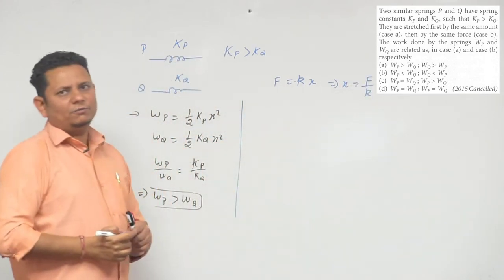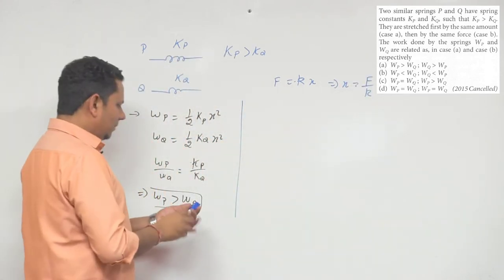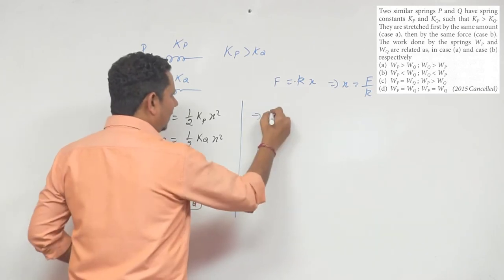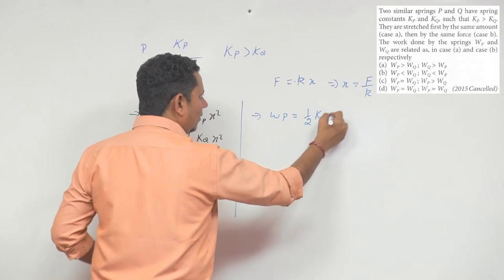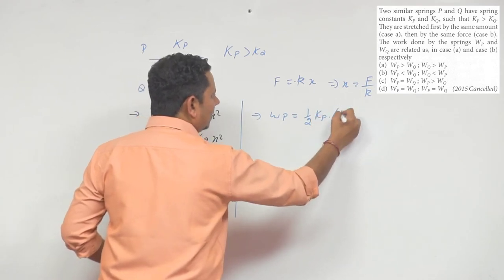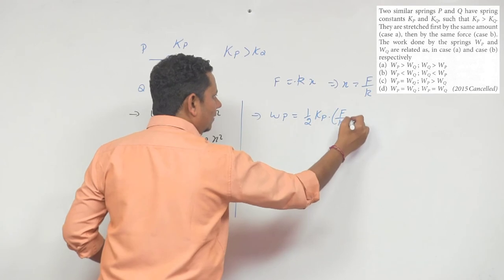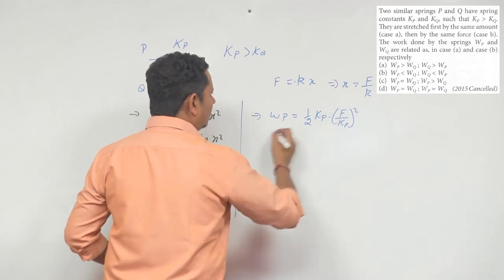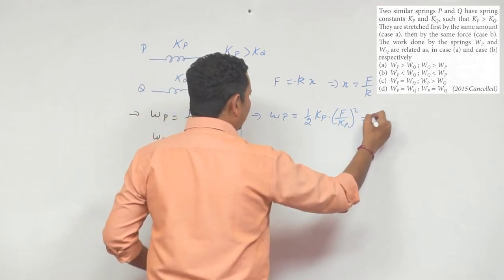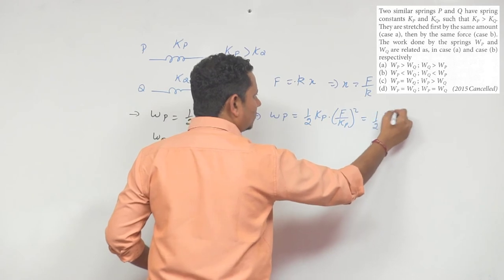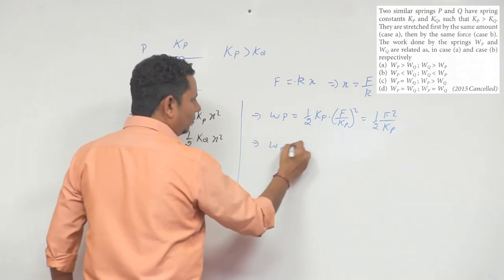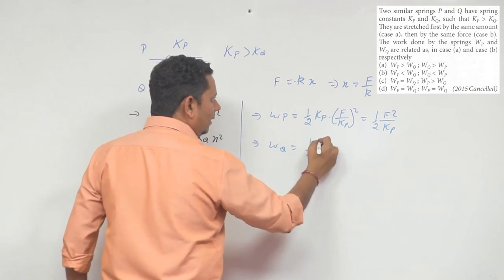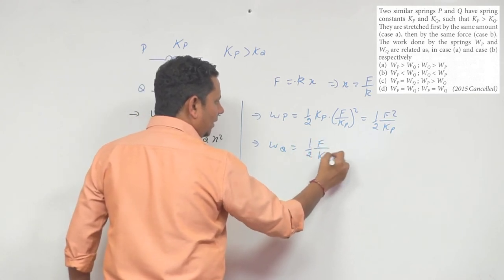The force will be equal to Kp multiplied by X, so X equals F divided by Kp. Work is half Kp X squared, which equals half F squared divided by Kp. Similarly work done in Q case is half F squared divided by Kq.